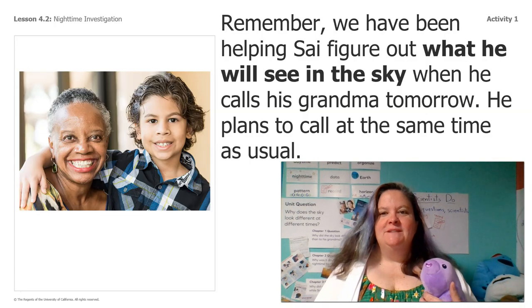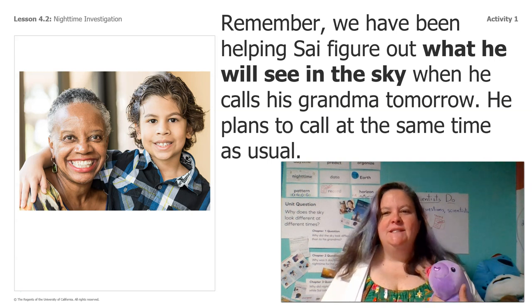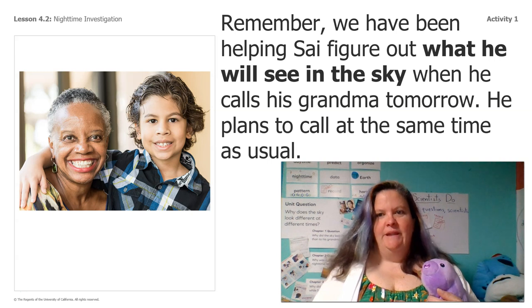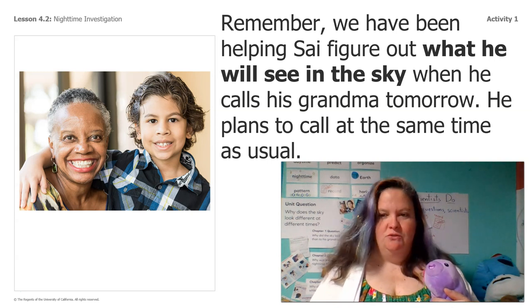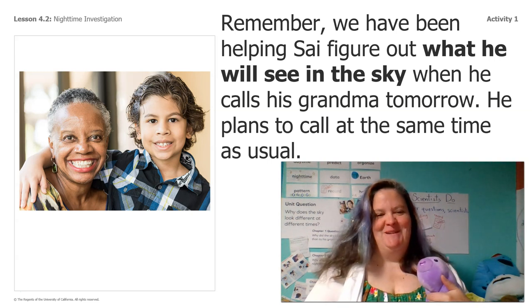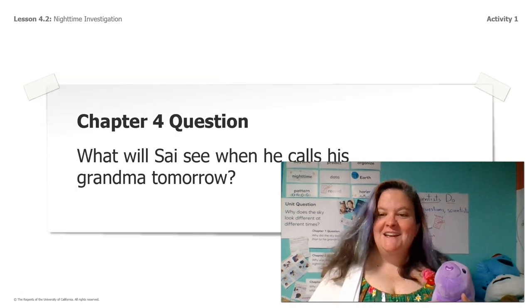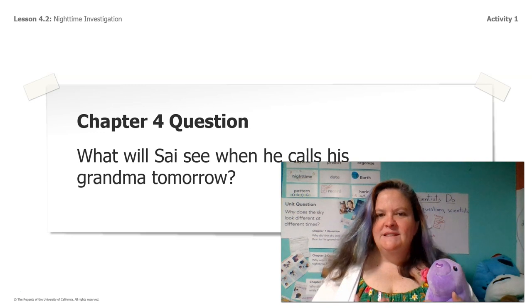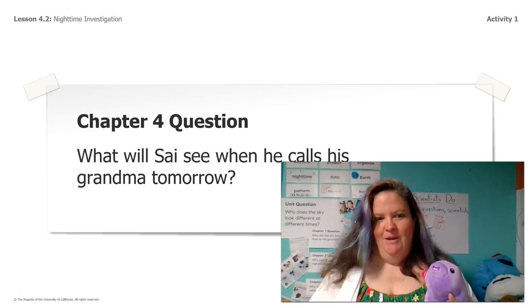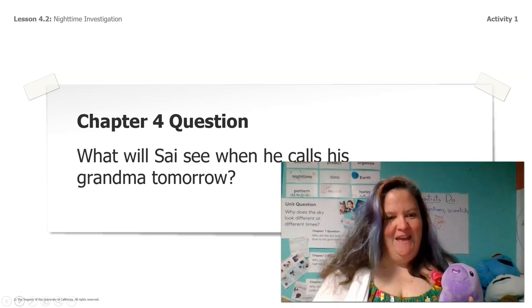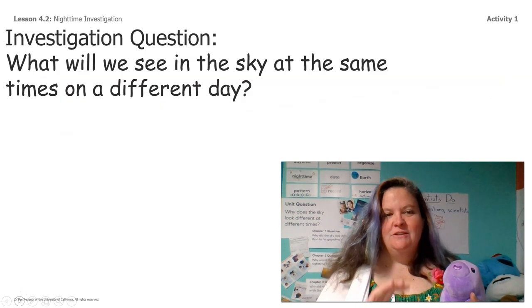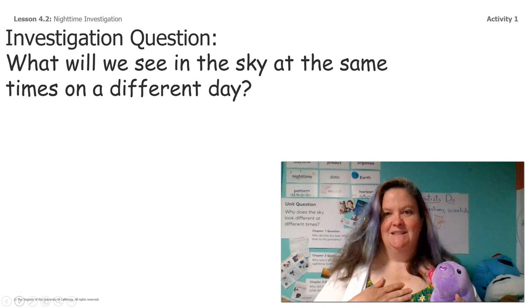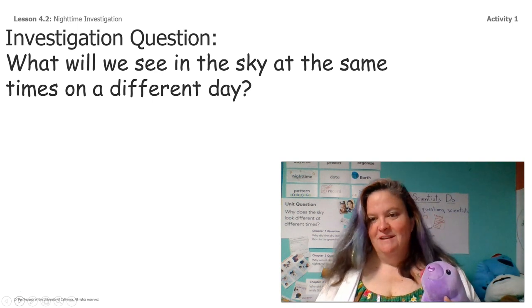Remember, we've been helping Cy figure out what he will see in the sky when he calls his grandma tomorrow. He plans to call at the same time as usual, which is right before he goes to bed. Because he's making that phone call, we want to figure out what Cy will see when he calls his grandma tomorrow. In order to do that, we have to answer this smaller question: what will we see in the sky at the same times on different days?